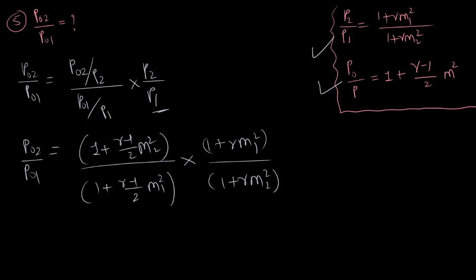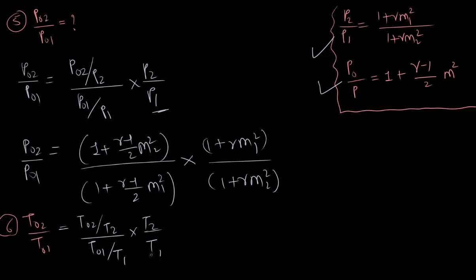Similarly, we can find T02/T01. This equals (T02/T2) × (T2/T1) × (T1/T01). We already know the relation between static temperature and stagnation temperature, and we have derived T2/T1. You can calculate this on your own.